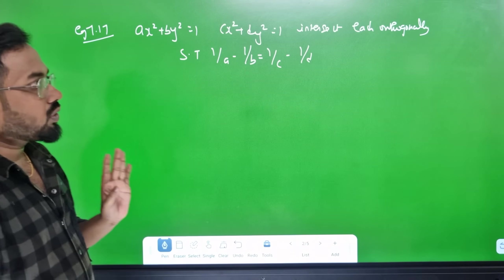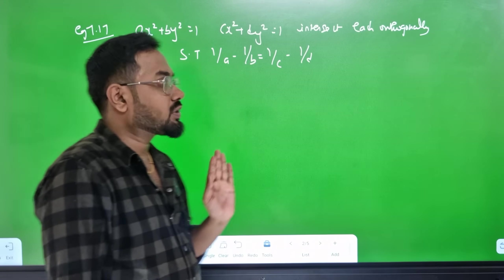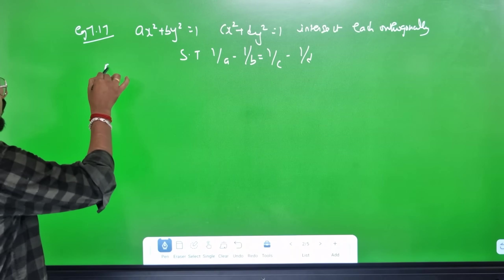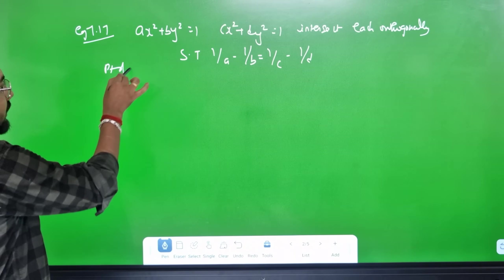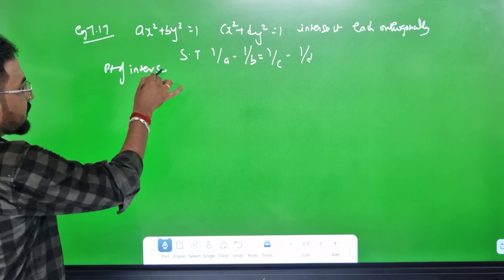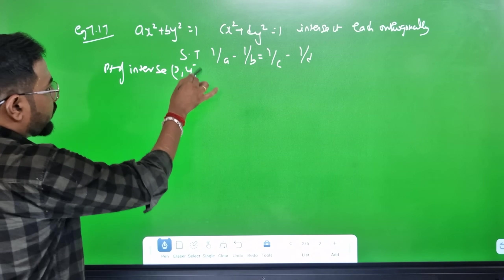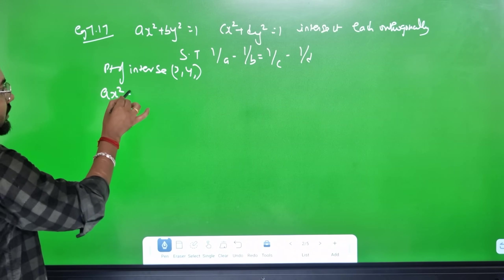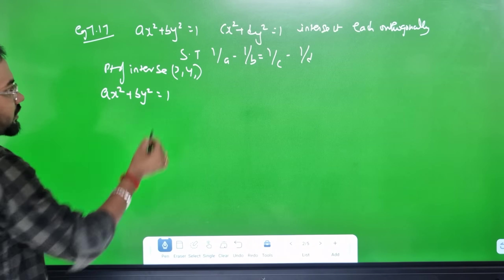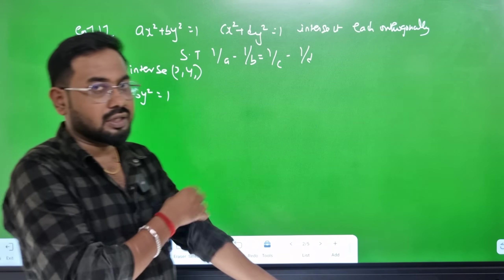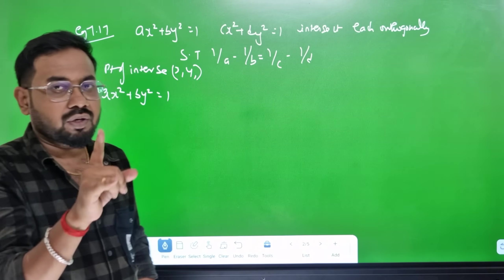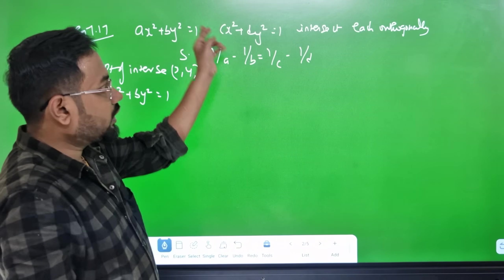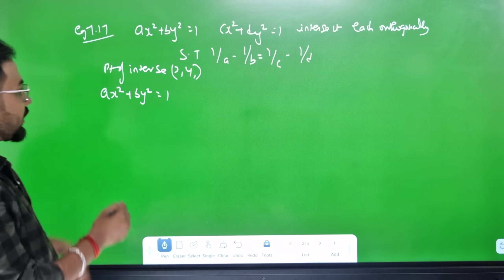Example 7.7: Show that the two curves M1 and M2 are orthogonal at their point of intersection (x1, y1). First, for the curve ax² + by² = 1, differentiate to find slope M1 = dy/dx.